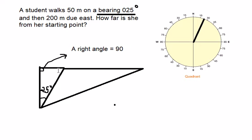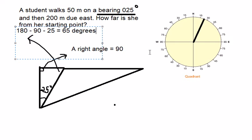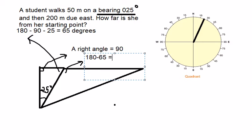If we want to find this angle here, we just use 180 minus 90 minus 25, which equals 65 degrees. So if we want to find this angle in here, we use 180 minus 65, which gives us 115 degrees.